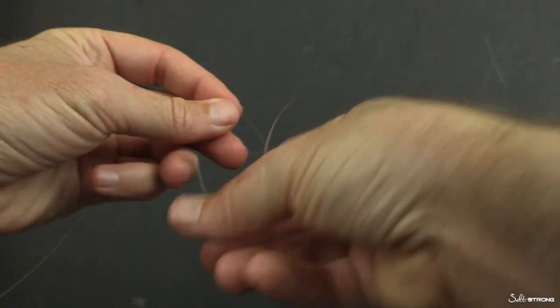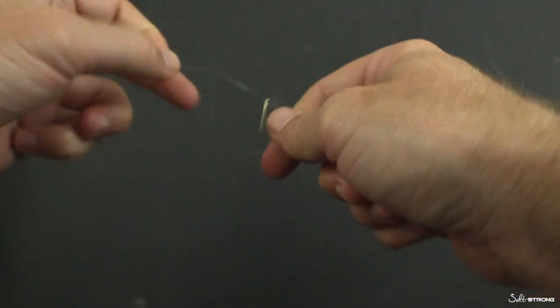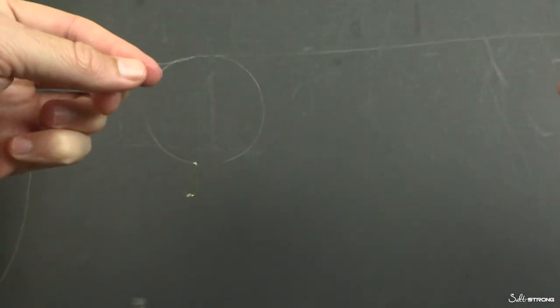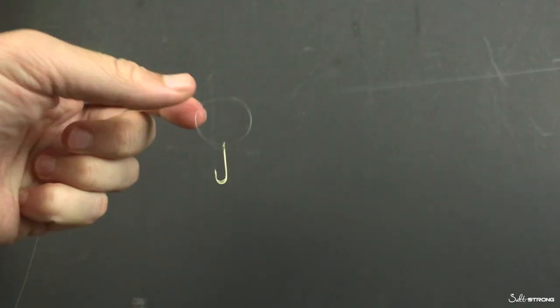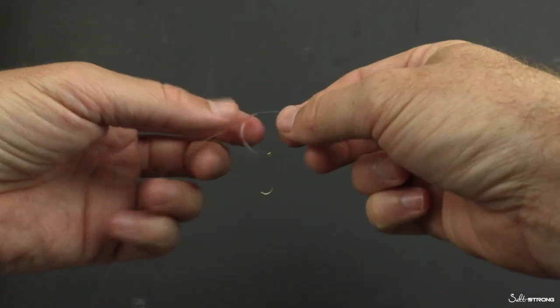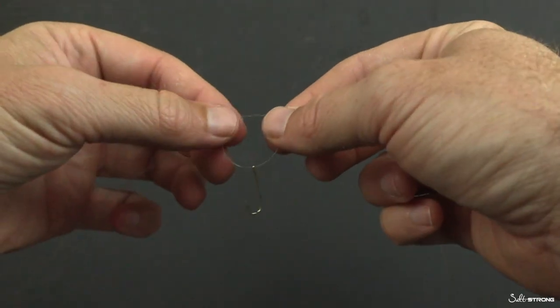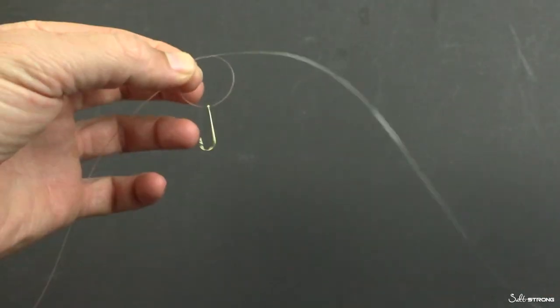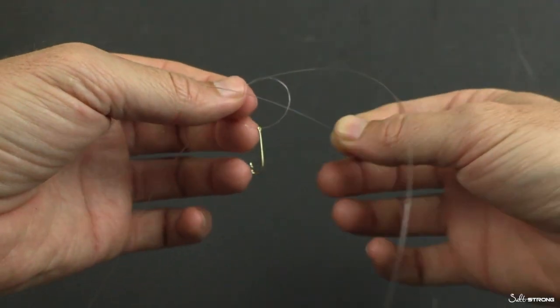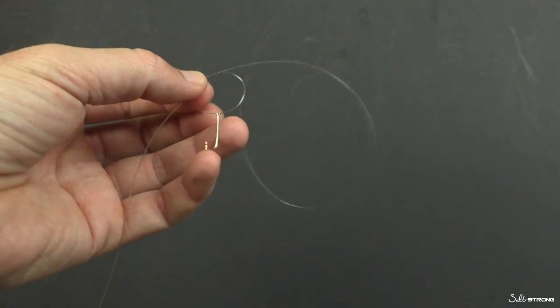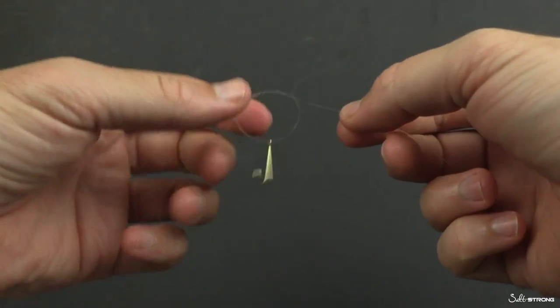So we're going to thread on however much line you need. If you're going to do six hooks, you better pull out more line. If you're going to do two, you don't need quite as much. And now that the hook is on there, we're just going to do a basic overhand knot, the most basic of all knots, and we're going to let this hook fall down. So now this hook is just falling and just sitting right in the middle of this overhand knot. So that's the starting point.